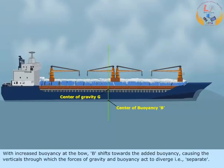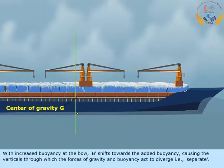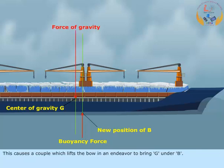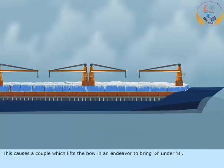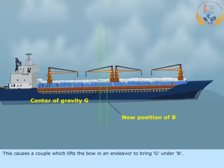With increased buoyancy at the bow, B shifts towards the added buoyancy, causing the verticals through which the forces of gravity and buoyancy act to diverge — that is, separate. This causes a couple which lifts the bow in an endeavor to bring G under B.